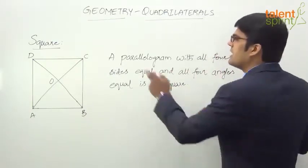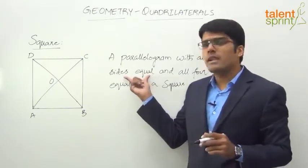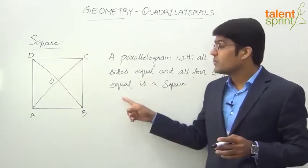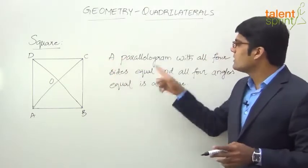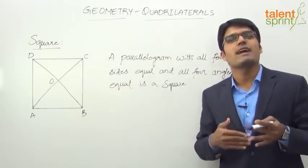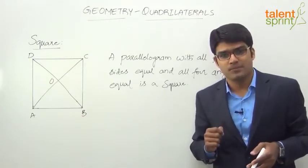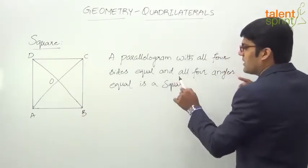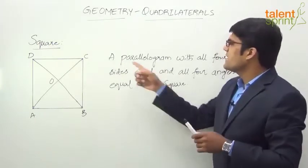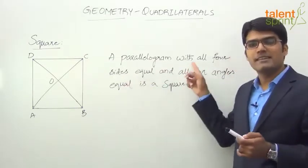A square can also be treated as a special rectangle or a special rhombus. A parallelogram with all four sides equal is a rhombus. What is additional in a square is that all four angles are also equal. So a rhombus with all four angles equal is a square. In a rhombus, only the opposite angles are equal, but if all four angles become equal, that rhombus is a square. Similarly, a parallelogram with all four angles equal is a rectangle, so instead we can say: rectangle with all four sides equal.